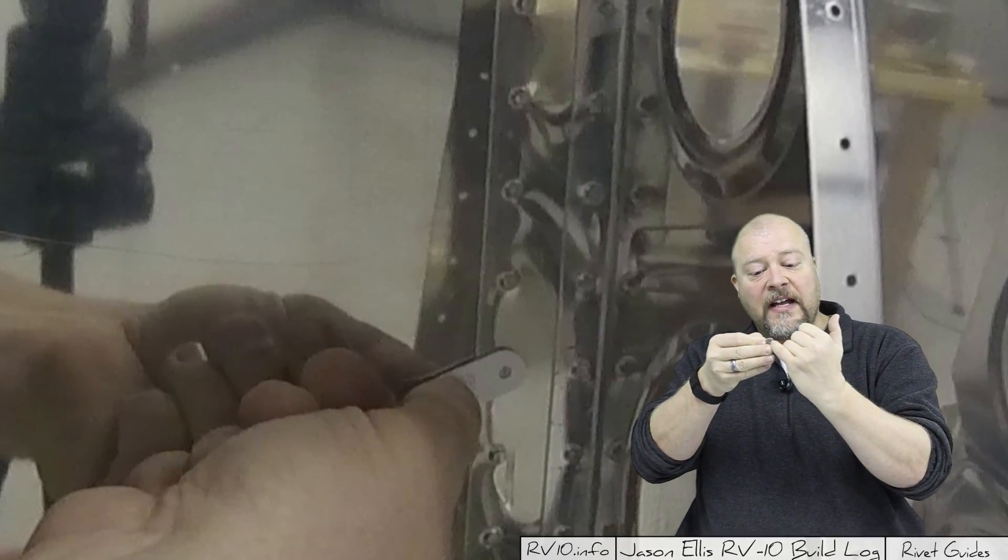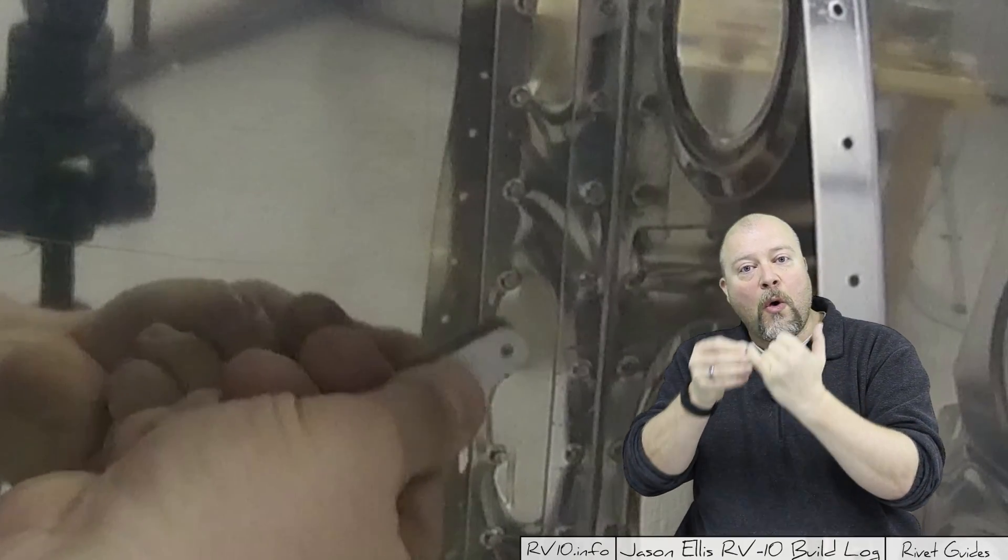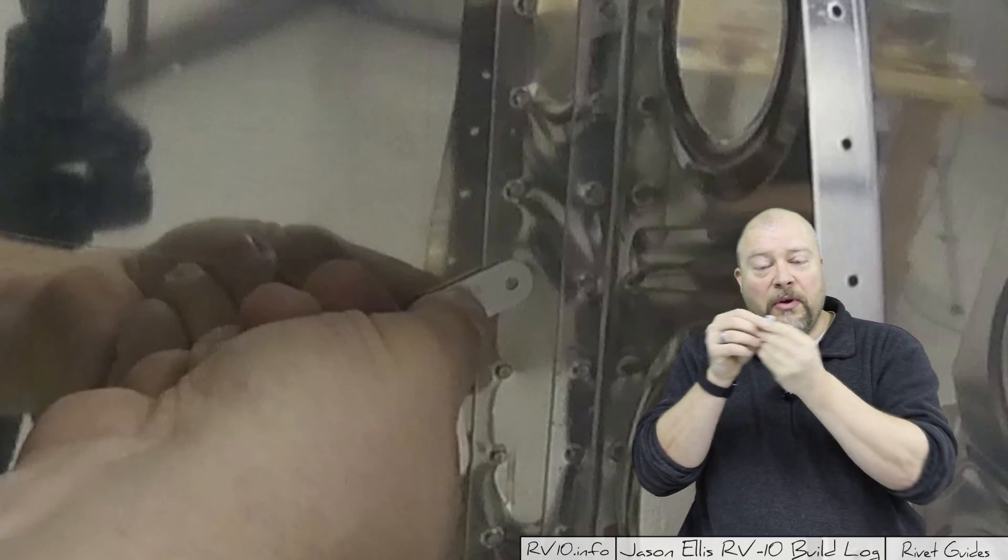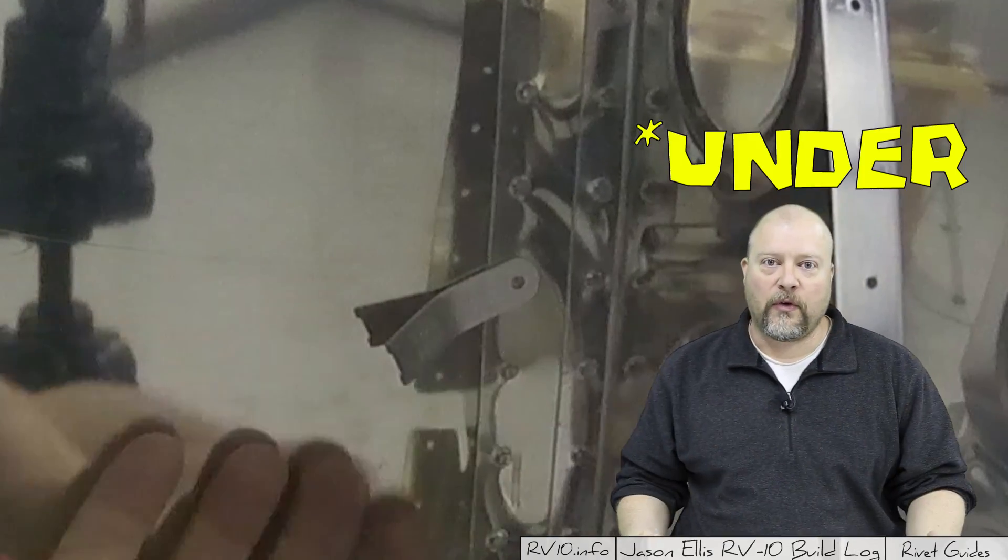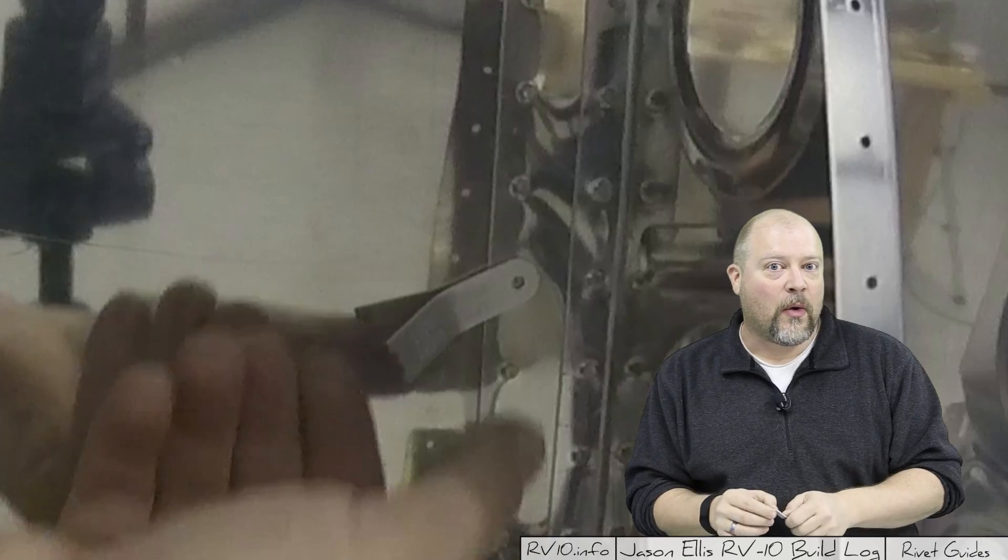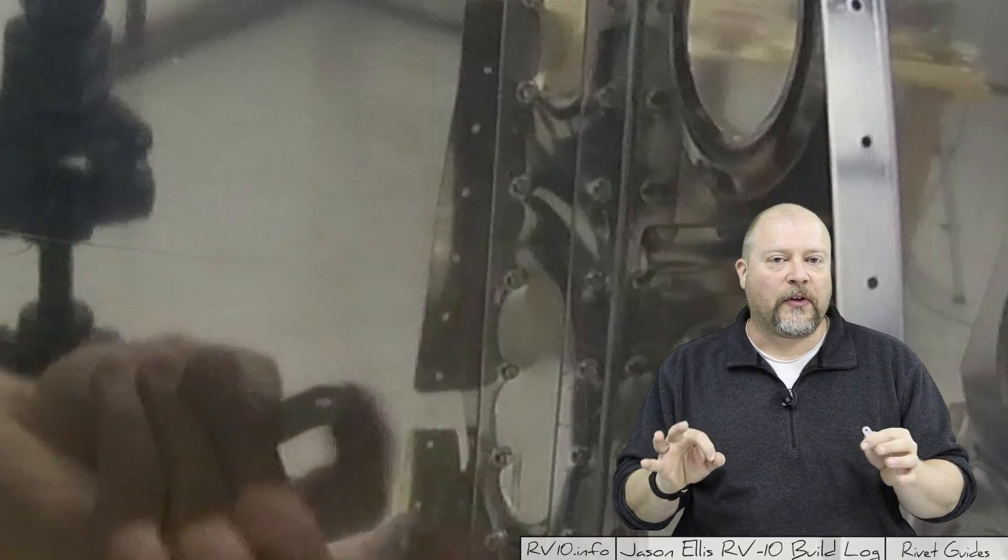If you cannot fit that rivet into the hole, then you've over-squeezed. Or if you put it on and it just falls off, you've over-squeezed. The idea is you want that hole to be completely filled by the rivet.